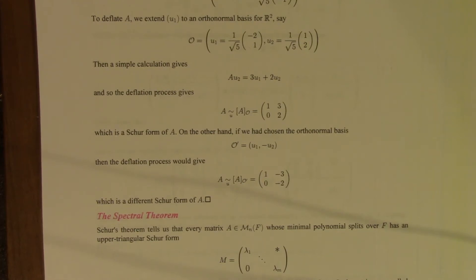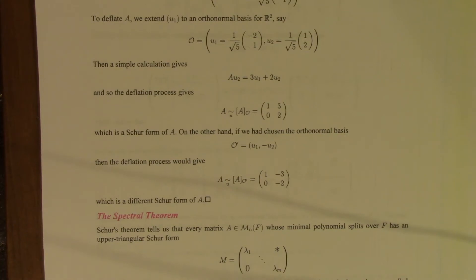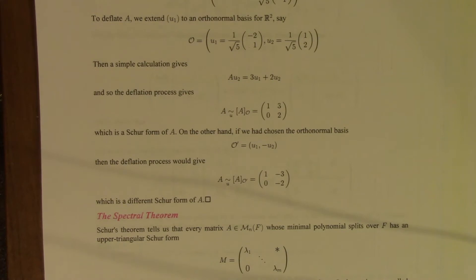What we saw was that any square matrix whose minimal polynomial splits is unitarily similar to an upper triangular matrix. In operator language, any finite dimensional linear operator whose minimal polynomial splits can be represented by an upper triangular matrix. This is one of the most important, if not the most important, result in matrix theory.